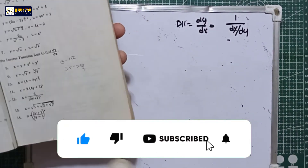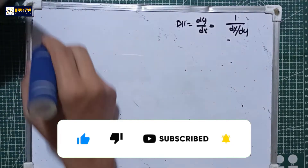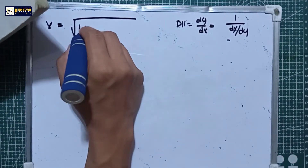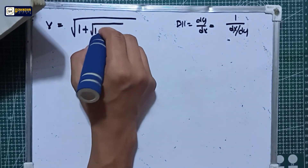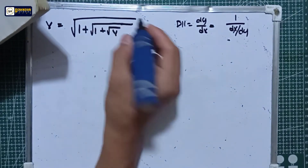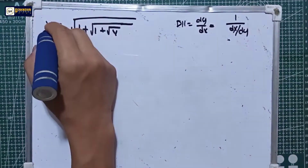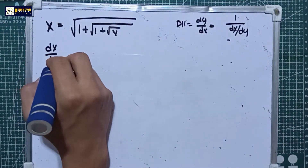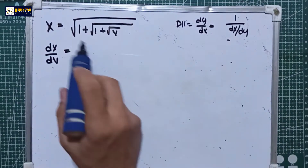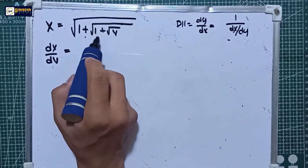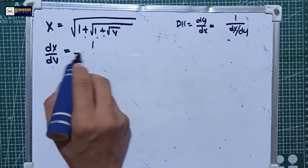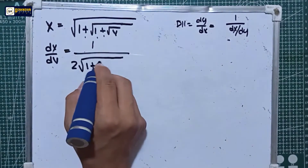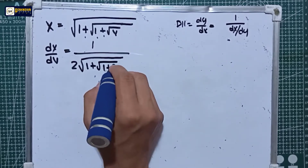For problem 13, we have x is equal to the square root of 1 plus the square root of 1 plus the square root of y. We will be deriving the x function with respect to y. So dx/dy is equal to 1 over 2 times the square root of 1 plus the square root of 1 plus the square root of y,